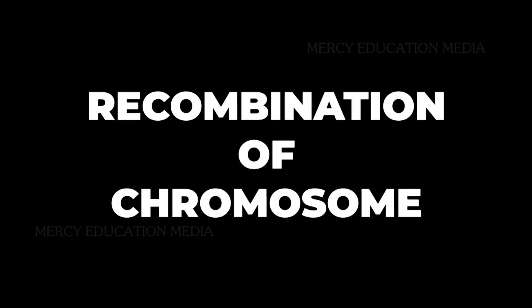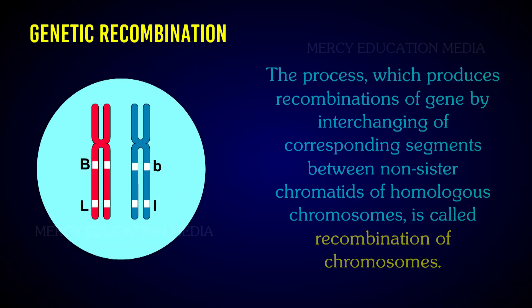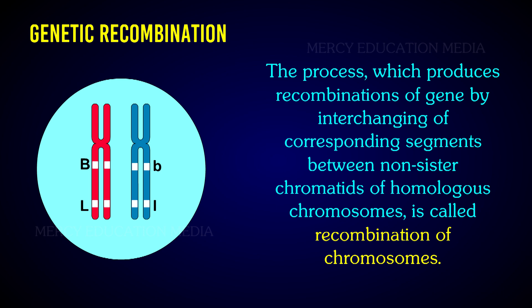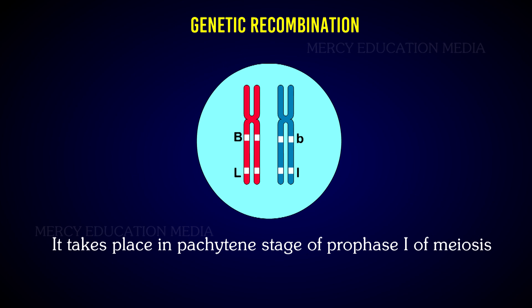What do you know about the recombination of chromosomes? The process which produces recombination of genes by interchanging of corresponding segments between the non-sister chromatids of homologous chromosomes is called the recombination of chromosomes. It takes place in the pachytene stage of prophase 1 of meiosis.